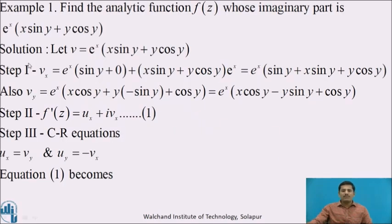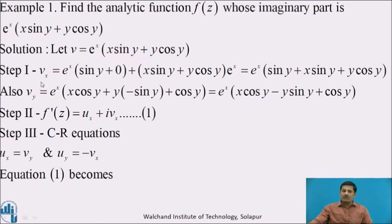Let us consider one example. Find the analytic function f(z) whose imaginary part is e^x·(x·sin y + y·cos y). Solution: here we have given the imaginary part, therefore we will denote it by v. Step 1: we differentiate the given function v partially with respect to x and y. Differentiating v partially with respect to x, treating y constant, we get vx equal to...